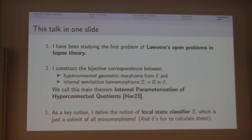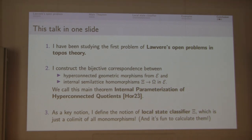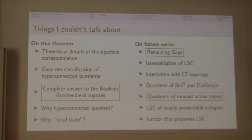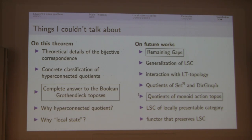Let me re-summarize what I said. I have been studying the first problem of Lawvere's open program in topos theory, which is about connected geometric morphisms. I construct a bijective correspondence between hyperconnective geometric morphisms and internal semilattice homomorphisms, and I call it the internal parameterization of hyperconnective quotients. As a key notion, I defined the local state classifier, which is just a colimit of all monomorphisms, and it is fun to calculate. If you have questions, please ask me later — preferably in very easy and slow English. Thank you.